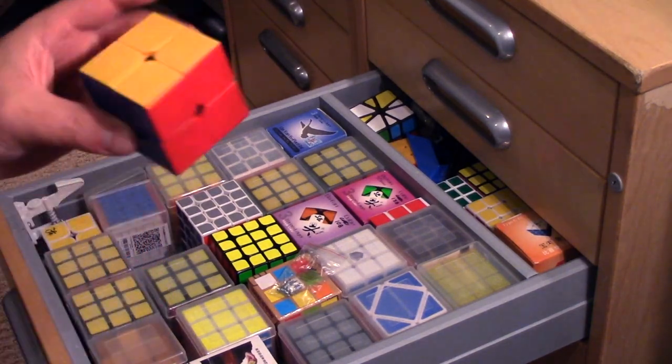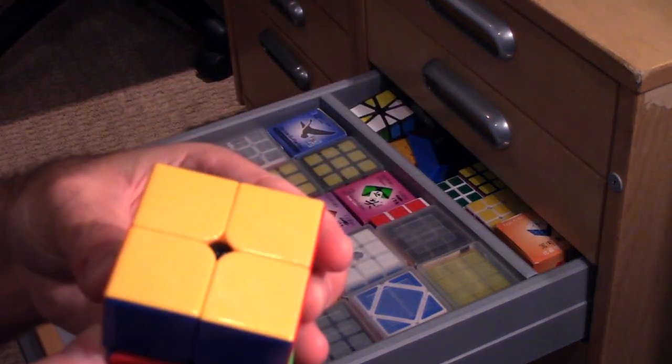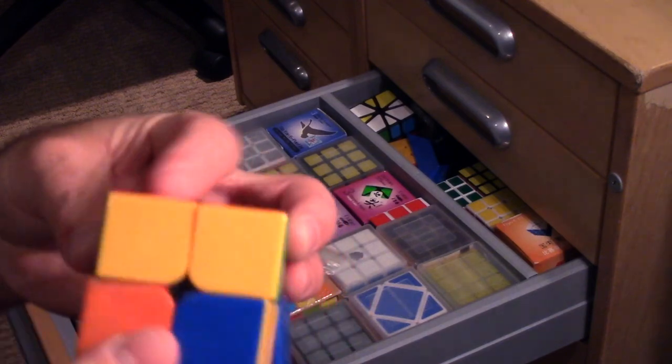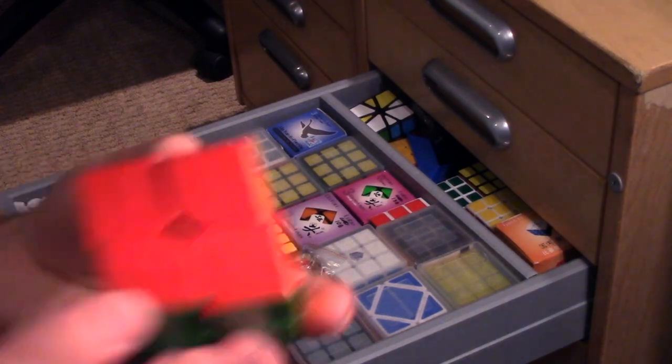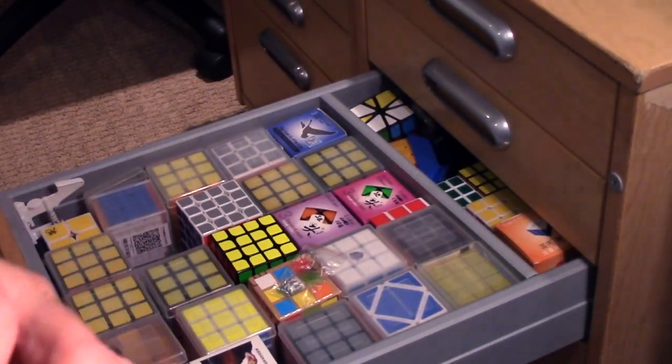This is a stickerless Shang Shao. When I was solving 2x2 more, I liked having a stickerless one. I actually think stickerless cubes solve better than stickered ones, even though I don't have many of them.